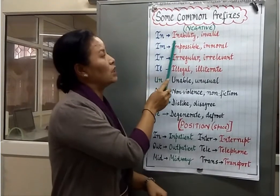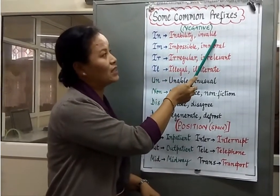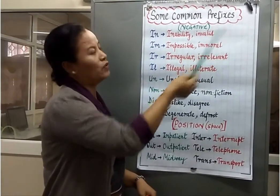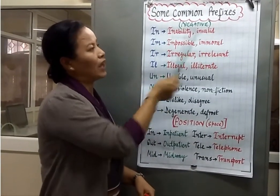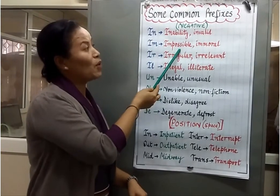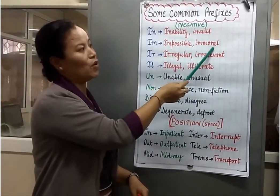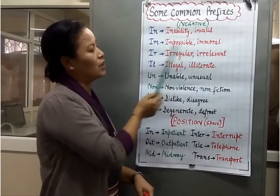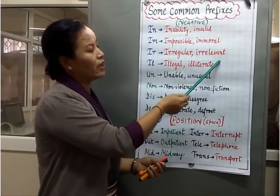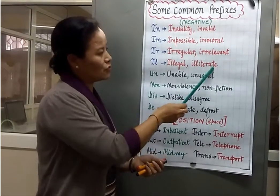With 'in,' we have 'inability' and 'invalid' — you can add more words; I've just given two examples. With 'im': possible becomes impossible; moral becomes immoral. Then we have: irregular, irrelevant, illegal, illiterate.